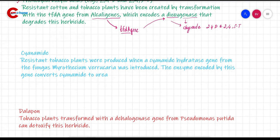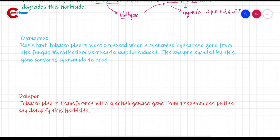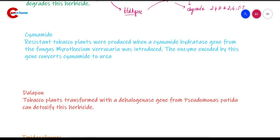Next is cyanamide. Here we can introduce a cyanide hydratase gene, which converts cyanamide into urea, effectively converting the herbicide into a non-harmful compound.